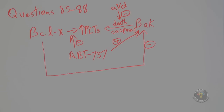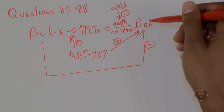Now looking at question 85: to prolong platelet lifespan, which of the following is most readily achievable and useful? The operative words are 'most readily achievable and useful.'